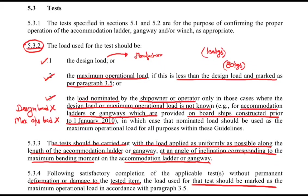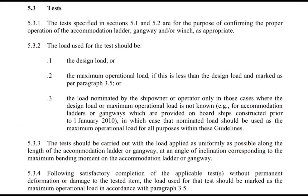After completing the test, if there is no deformation or damage to the tested item, the test is successful. The load used for the test should then be marked as the maximum operational load as per 3.5. If the ship had no known load and used a nominated load, once tested successfully with no damage or deformation, that nominated load becomes the maximum operational load and must be marked as per 3.5.